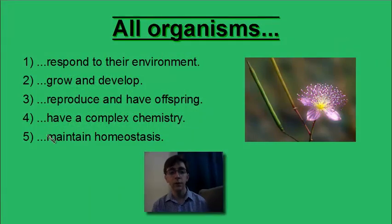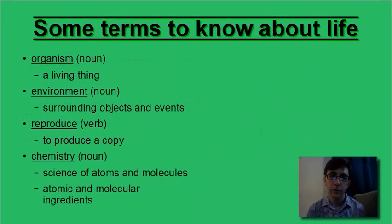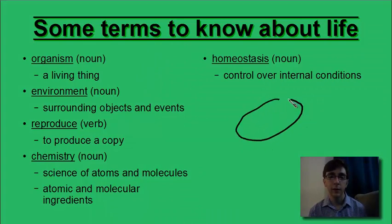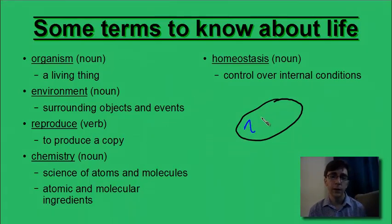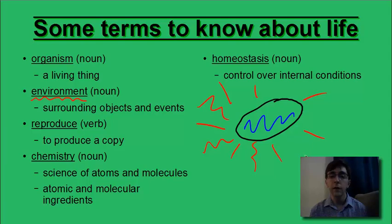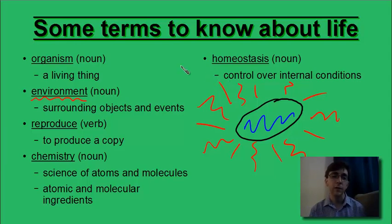Next, we'll see that all organisms maintain homeostasis — another word to add to our term list. Homeostasis is the control over internal conditions. This implies that all organisms have an inside and an outside — the inside shown here in blue, and the outside shown in red. The environment, or the surrounding objects and events, is whatever is outside of the living thing. The environment is not under homeostasis; it is not under the control of the organism. The organism only has control over its insides.